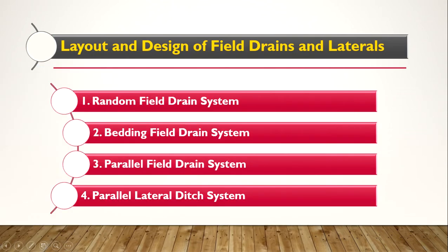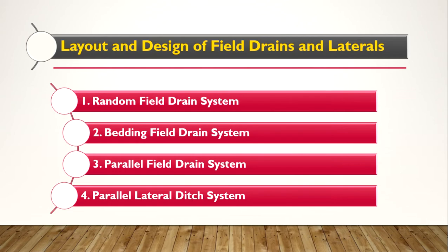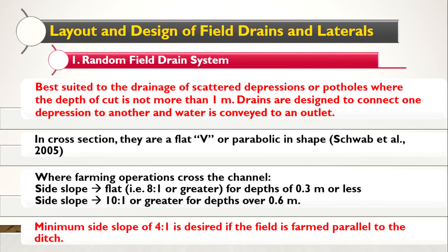Now we will move on to the different layouts of surface drainage systems. The field laterals can be arranged in different ways, and according to the arrangement we have four types: first is the random field drain system, second is the bedding field drain system, third is the parallel field drain system, and fourth is the parallel lateral ditch system. There is also a cross slope ditch system, which will be covered in an upcoming slide.